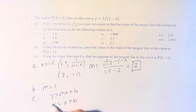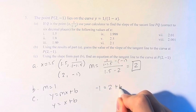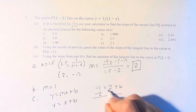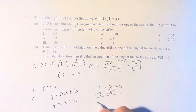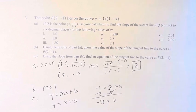Plugging in this point, y is -1, x is 2, plus b. To cancel, -1 minus 2 is -3, is equal to b.